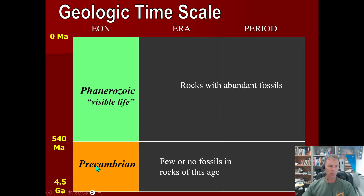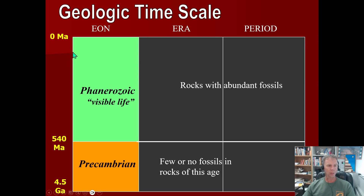In my 102 class, we do divide the Precambrian into three chunks of time, but I don't do this at the 101 level. So for those who are going to say 'what about the Archean, the Proterozoic, and the Hadean?' — I understand those exist. But this is a Geology 101 lecture, and if you throw all the time periods at students at this level, it overwhelms them. I find it's better to start baby steps with just the more common geologic time periods and then move from there.